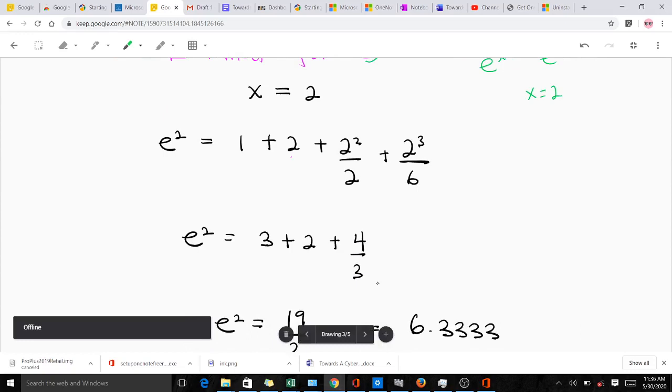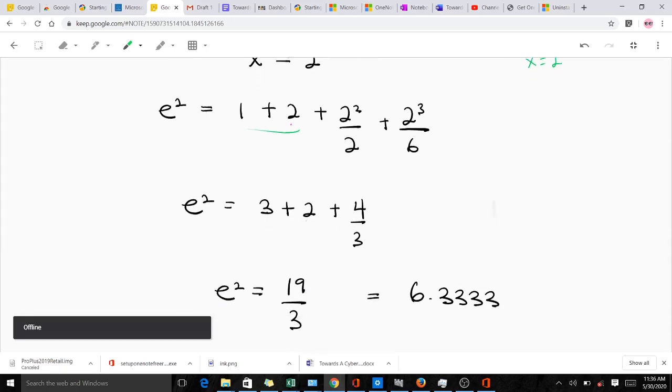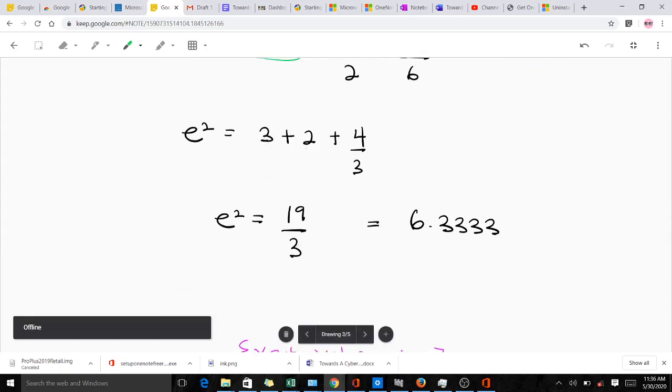We are going to get 1 plus 2 plus 2 squared over 2 plus 2 cubed over 6. This is going to give us: the whole of this gives us 3, this gives us 2, and this gives us 4 over 3. Finding the sum, we are going to get 19 over 3, which is going to give us 6.3333.